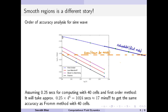Instead of using 40 mesh points, we are now using 64 times more mesh cells to achieve the same accuracy — that is 2560 cells. The memory required for allocation of variables also grows exponentially as we do mesh refinements, so we see a real advantage in going to higher order methods compared to doing the same computation with a lower order method.